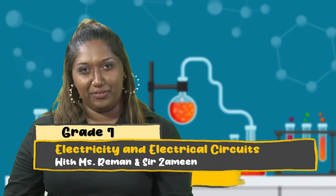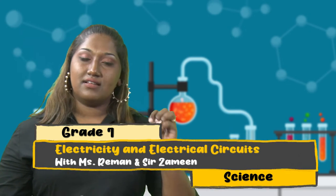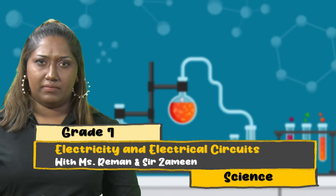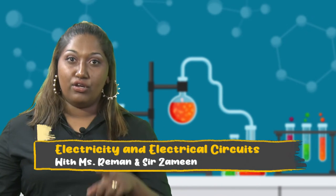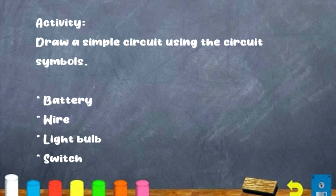Now, boys and girls, I have an activity for you. Using those lists of symbols from our table, do you think you can draw a simple circuit using the circuit symbol? Let us get going with that. Now, boys and girls, the symbols that you will be using to draw that simple circuit will be your battery, wire, bulb and switch. So, let's get drawing!